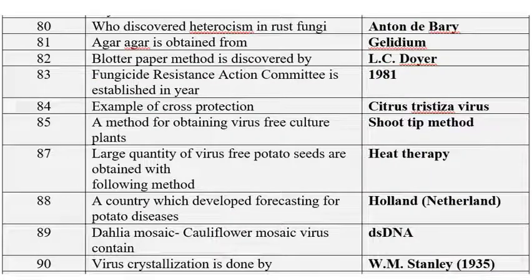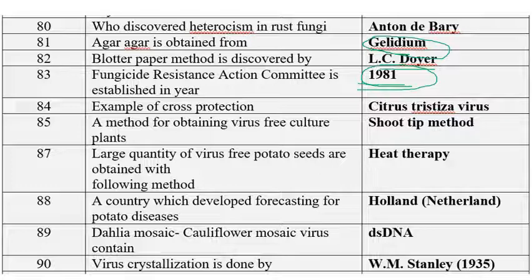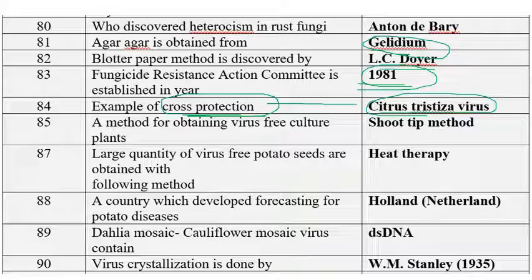Agar agar is obtained from red algae, that is Gelidium species. Blotter paper method was discovered by Lewis Dyer. Fungicide Resistance Action Committee (FRAC) was established in 1981 — this is very important. Example of cross protection is citrus tristeza virus; even though it was originally developed for tobacco mosaic virus, citrus tristeza virus is now commercially employed.